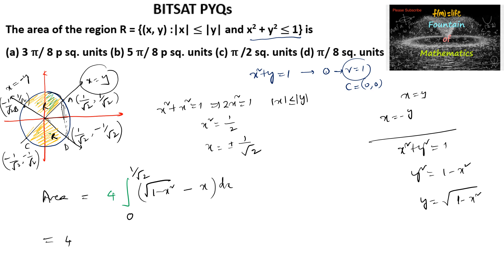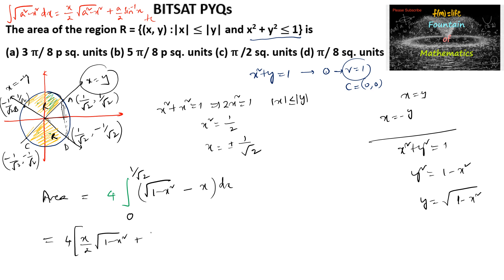We use the standard formula: ∫√(A² - X²) dX = (X/2)√(A² - X²) + (A/2) sin⁻¹(X/A) + C. So we evaluate [( X/2)√(1 - X²) + (1/2) sin⁻¹(X) - X²/2] from 0 to 1/√2.